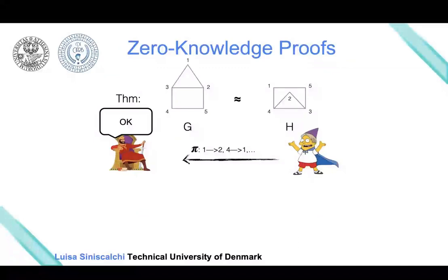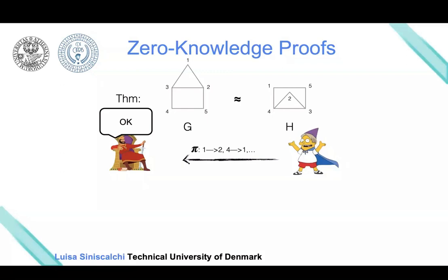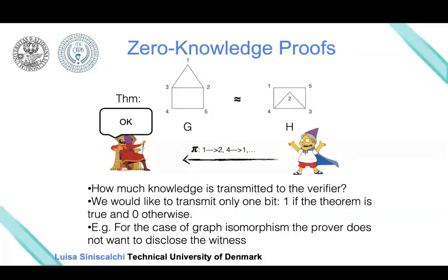Let's come back now to our first example, where we wanted to prove that two graphs are isomorphic, and consider some observations. Here there is a graph G and a graph H. To prove they are isomorphic, the prover sends the permutation to the verifier. But this is more information than the verifier is supposed to know—the verifier only needs to be convinced that the statement is true.